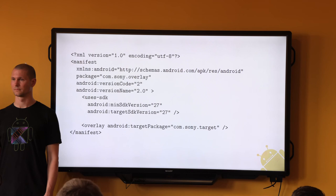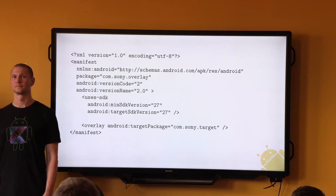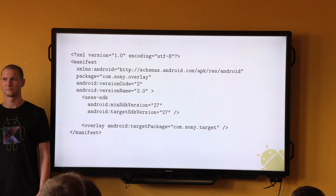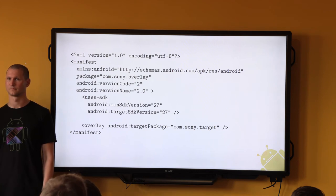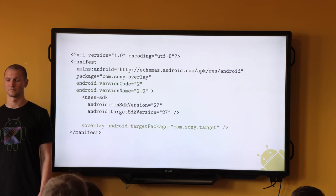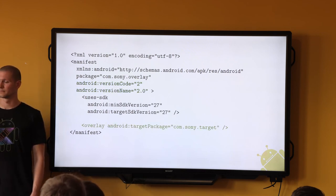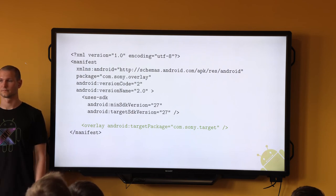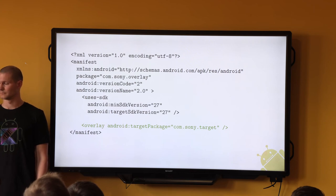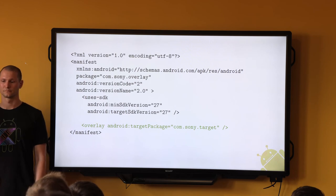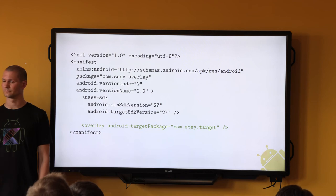You add a manifest which you'll recognize from application development — it's a regular application manifest, almost. It has package name, version info, and so forth. The most important element you will not find in a regular application manifest is the overlay element. It defines the overlay package, and the value of its targetPackage attribute is the package name of the application or framework whose resources you are modifying.